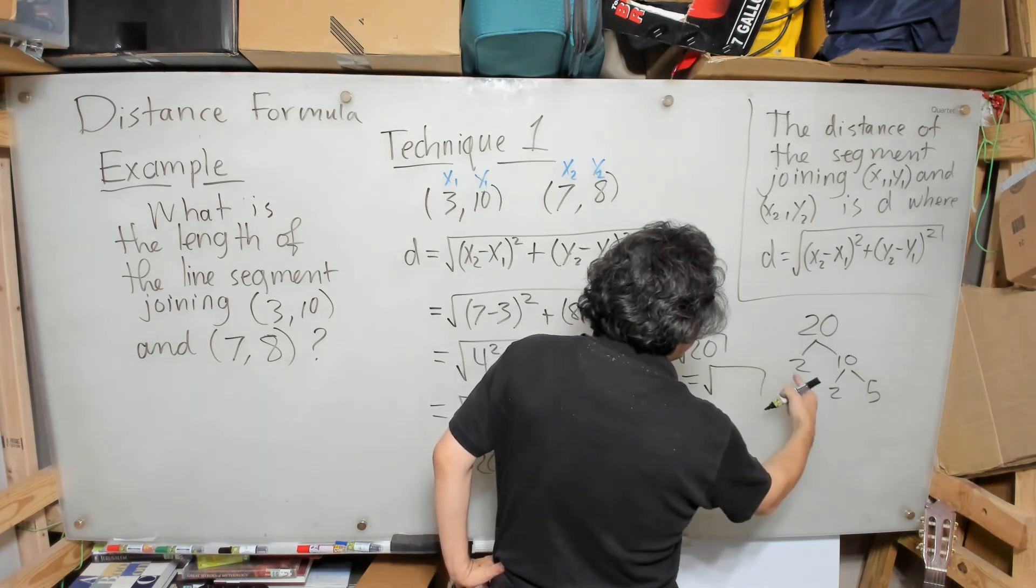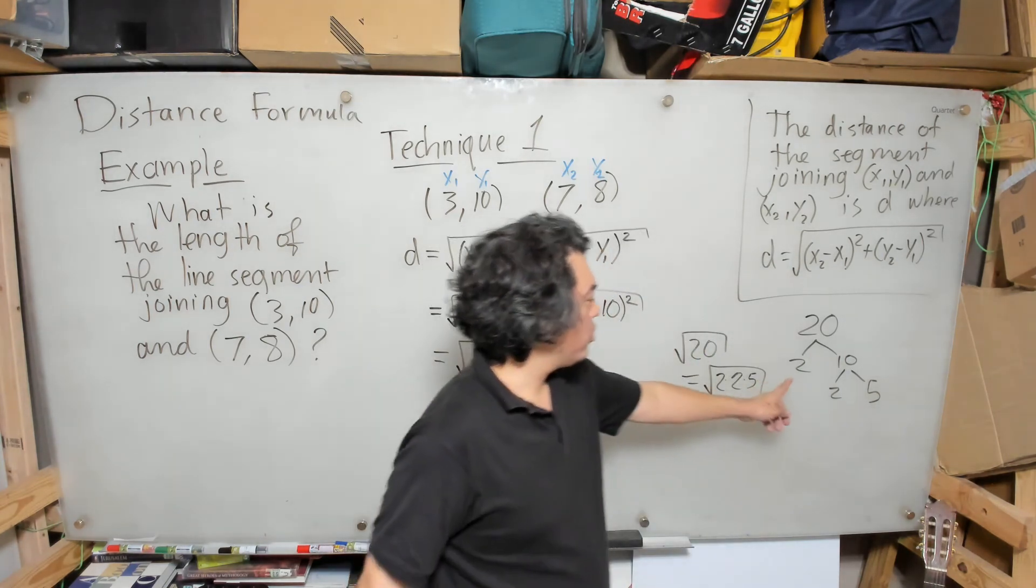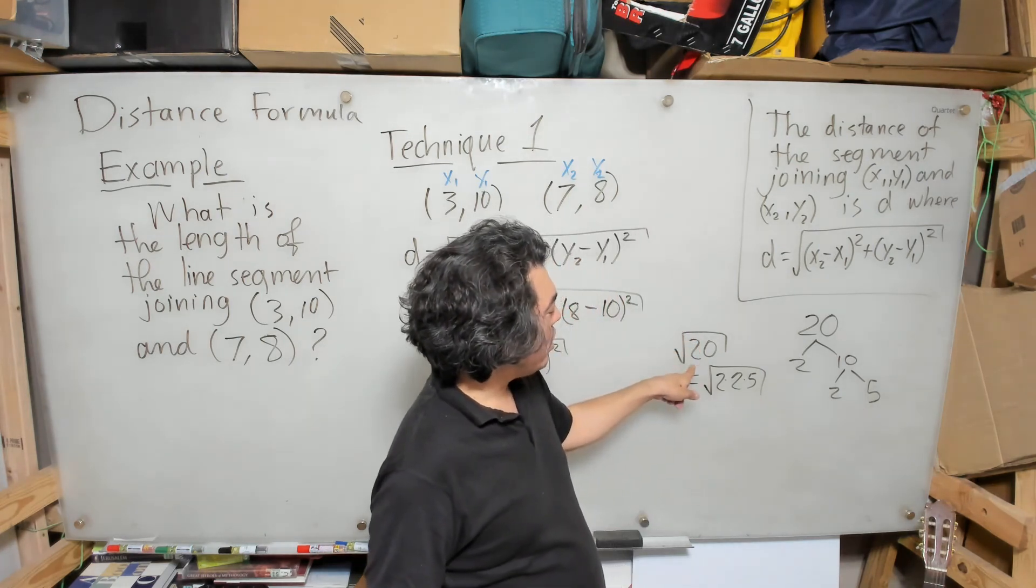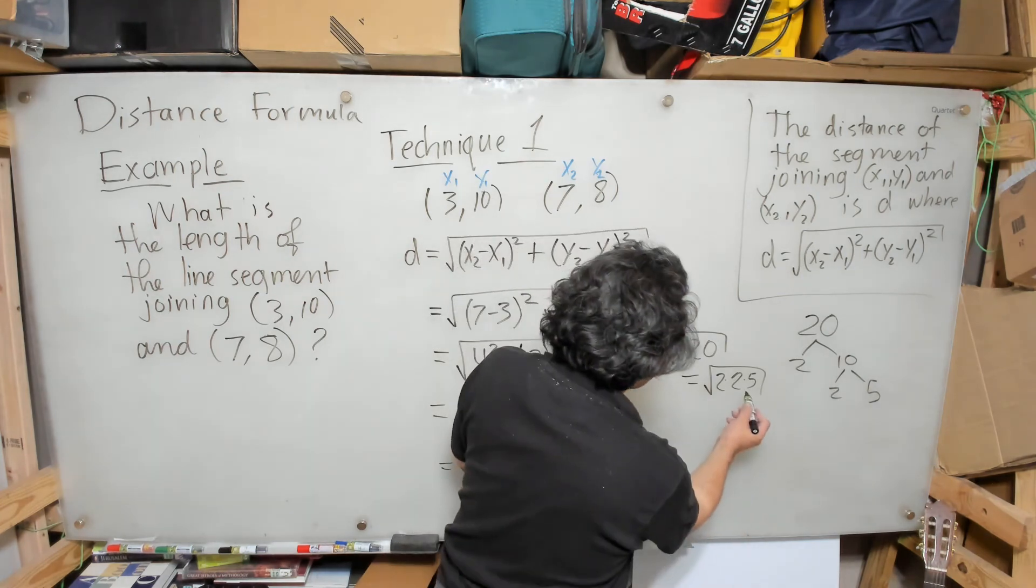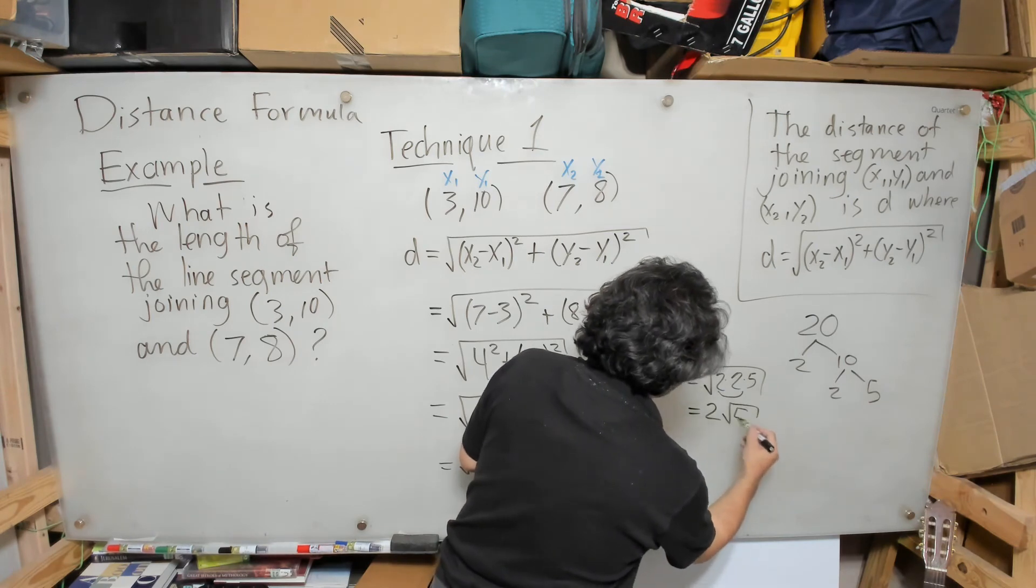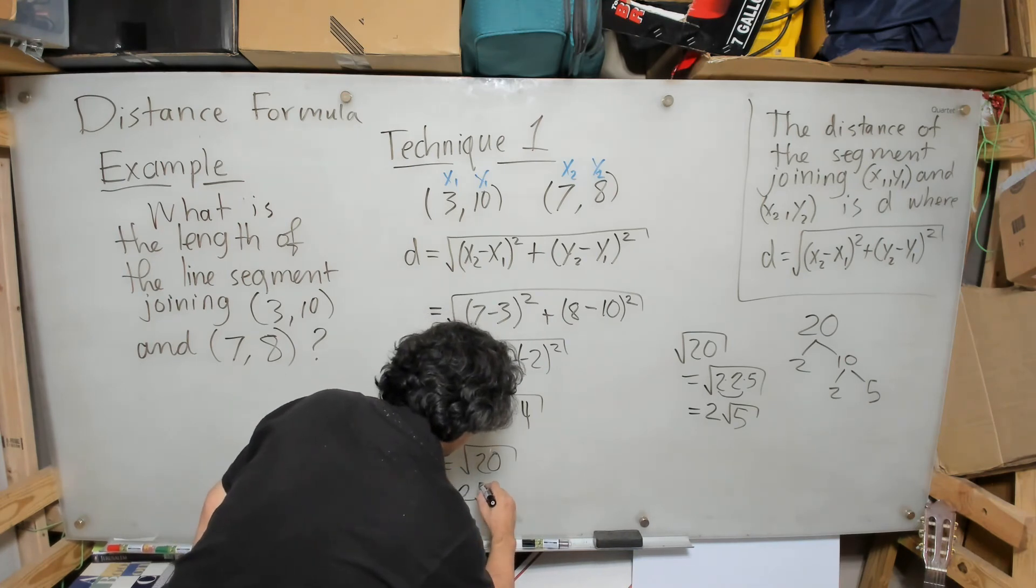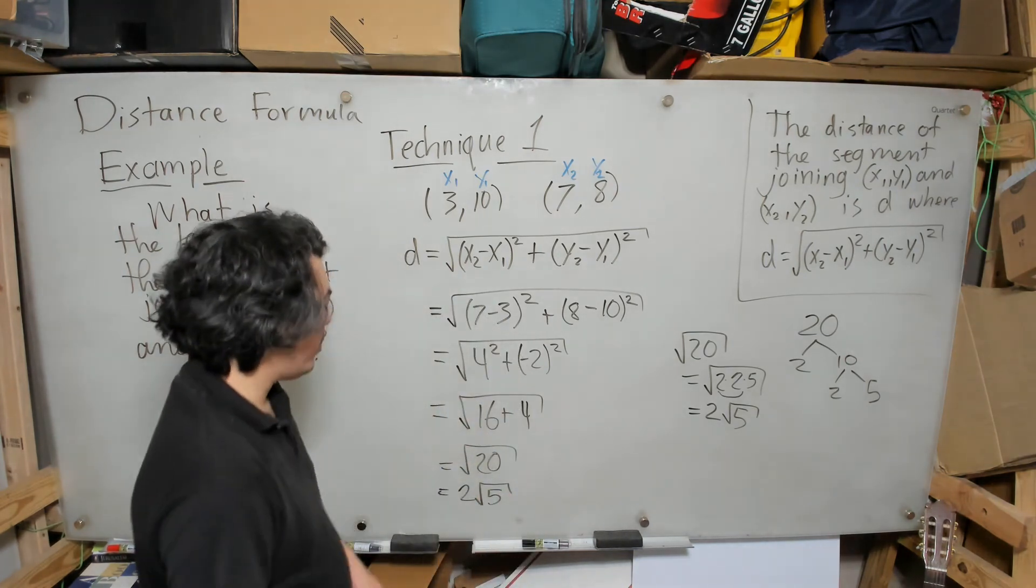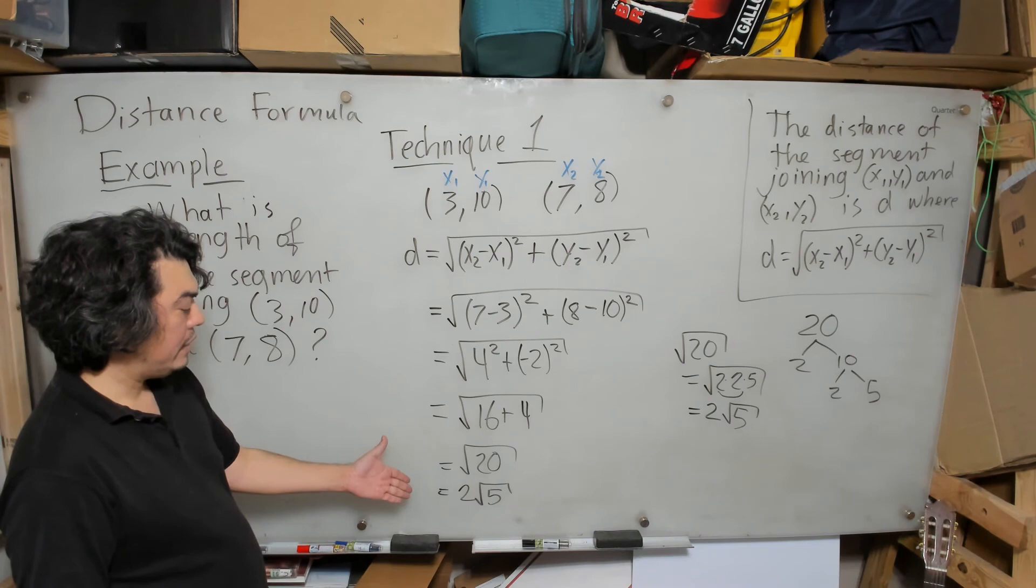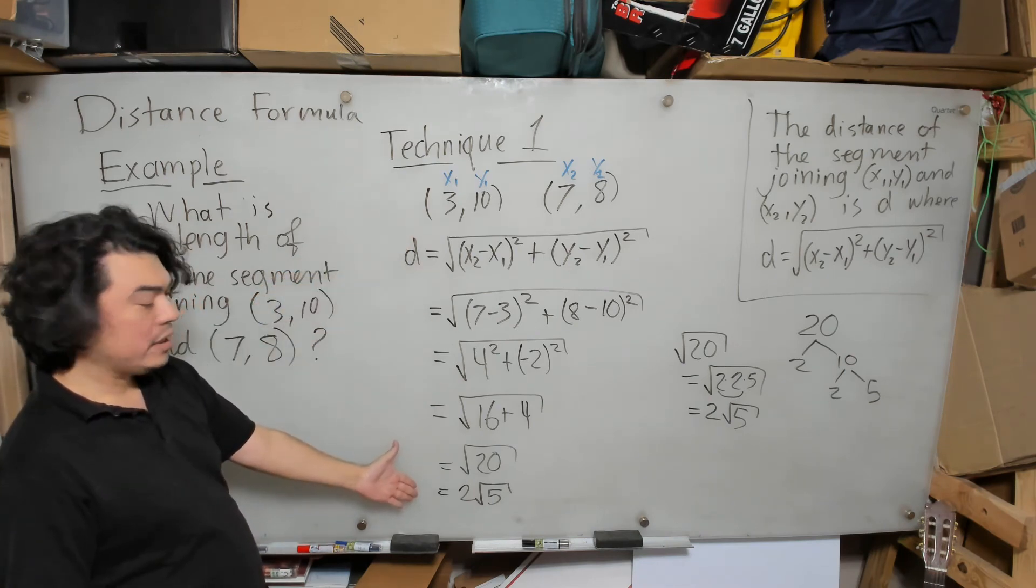Therefore I can write down the square root of 20 as the square root of 2 times 2 times 5. I can double check that 2 times 2 is 4, 4 times 5 is 20, so I can see that I've replaced 20 with its prime factorization. Now here, if I have a pair of twos inside, I can pull out a 2, so I get 2√5.